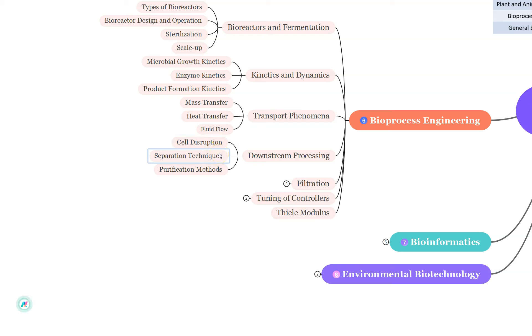From downstream processing, cell disruption which are the mechanical and non-mechanical methods. Separation techniques such as centrifugation, filtration, sedimentation, etc. And most important are the purification methods. Lots of questions are asked like chromatography: affinity, ion exchange, gel filtration, precipitation and extraction.